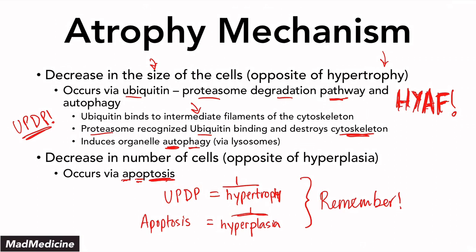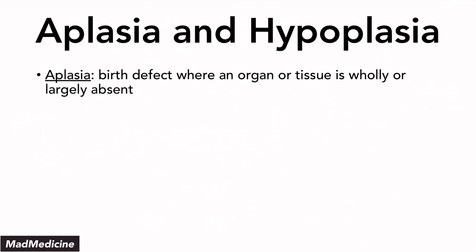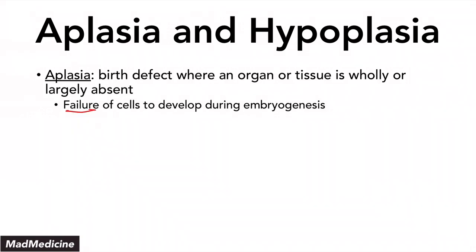Now we're going to talk about two more concepts that relate to atrophy: aplasia and hypoplasia. Aplasia is a birth defect where an organ or tissue is completely absent — it was never created. It happens due to a failure of cells to develop during embryogenesis. An example of this is renal agenesis, where babies are born with one or both kidneys absent, because the cells failed to develop when the embryo was developing into a fetus.